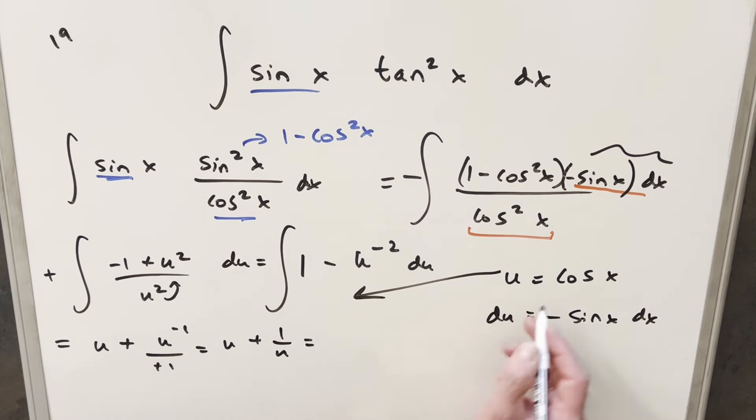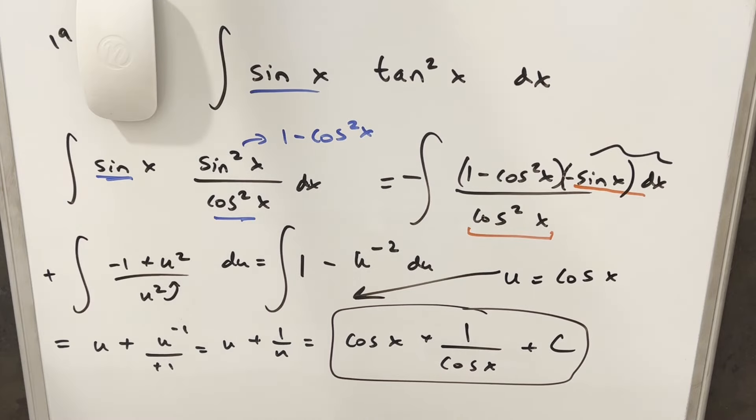So then we'll just go ahead with this substitution. This is going to become 1 minus u squared here. That's going to be du, and this is going to be just u squared in the denominator.